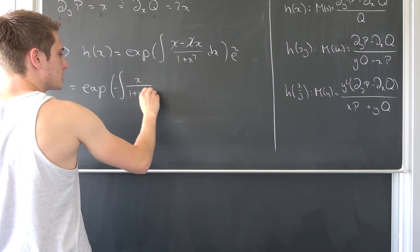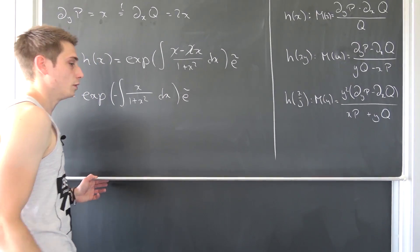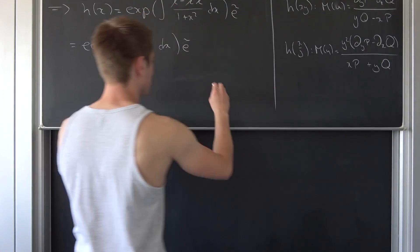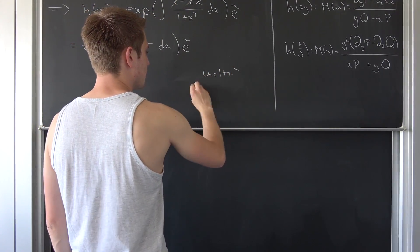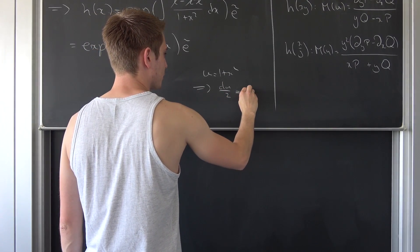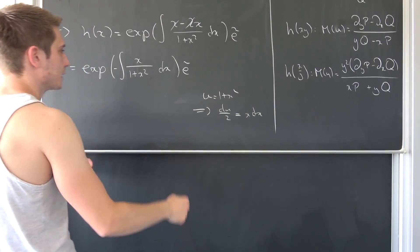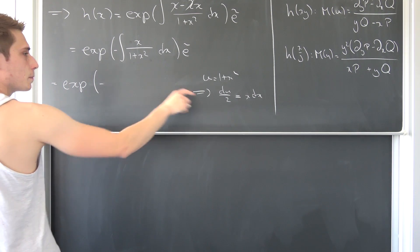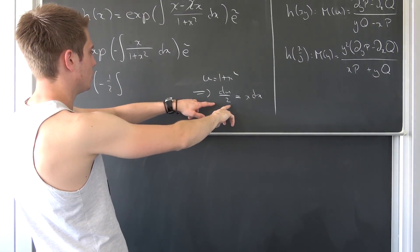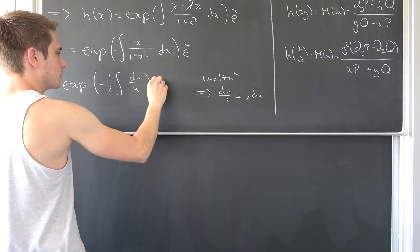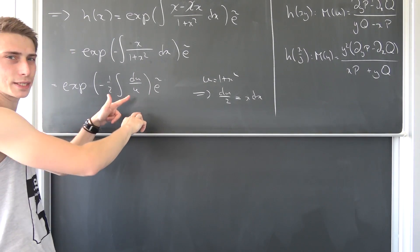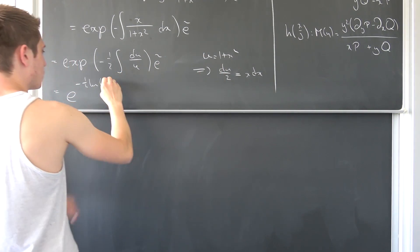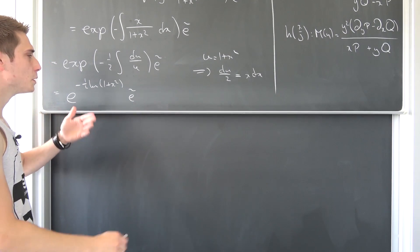So we need to integrate x over (1 + x²). Let's use substitution: u = 1 + x², meaning du/2 = x dx. So x dx is nothing but du/2, leaving us with exp of negative one-half times the integral of du/u. Now du/u is nothing but the natural log, leaving us with e to the (−1/2) · ln(u), where u is (1 + x²).